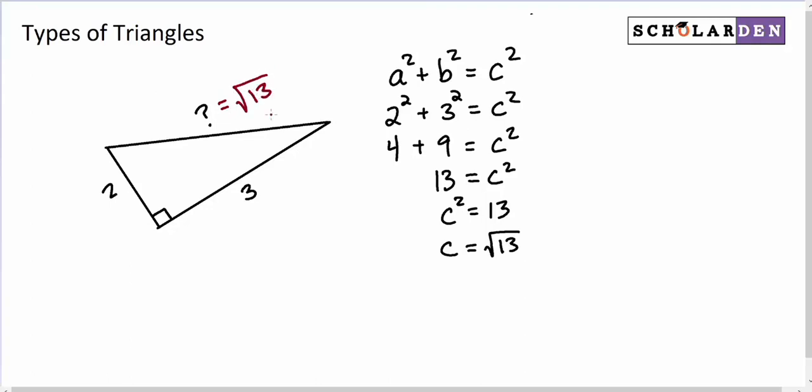Now notice that this is what we call an irrational number. You would have to use a calculator to get a decimal approximation. That is almost always going to be what happens if you just pick random numbers, like I just picked a 2 and a 3. The third side is usually going to come out to be a radical like that.